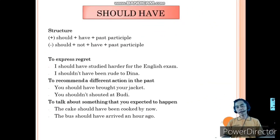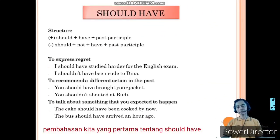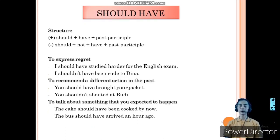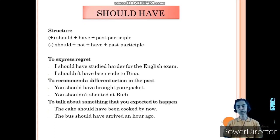Our first discussion is about should have. The structure for should have: for the positive sentence, it is should plus have plus past participle. And for the negative sentence, it is should plus not plus have plus past participle.